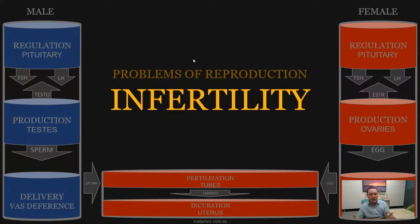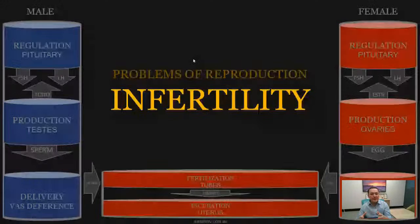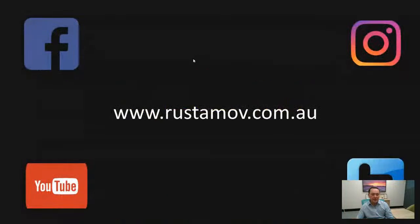Problems at any step of this production process — gametes, fertilization, incubation, and implantation — can cause infertility. Establishing the exact cause of infertility in individual couples is very important. In the next talk, we will discuss how to achieve this by doing various investigations for infertility. Thank you for your time — I wish you a great evening and will see you next time.